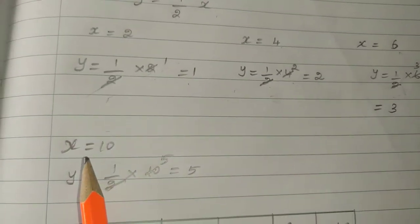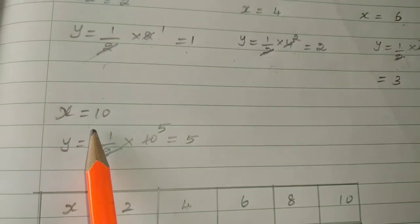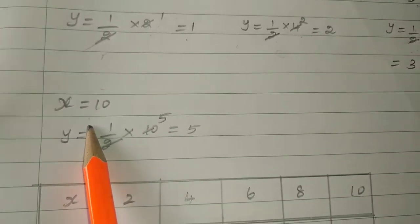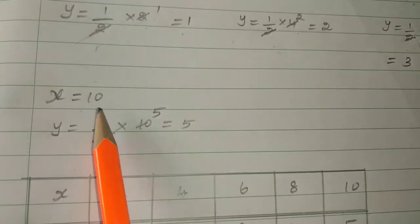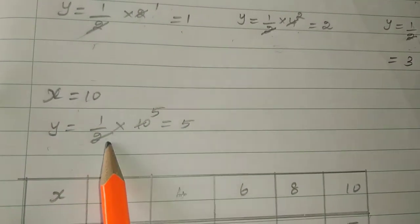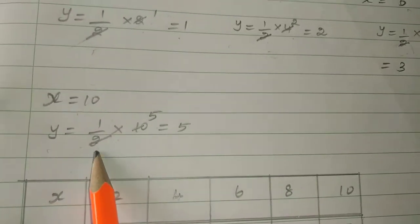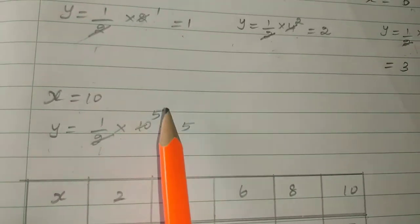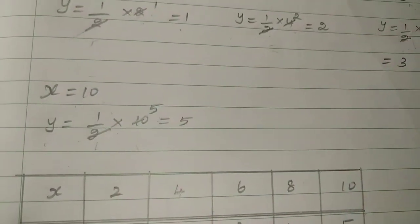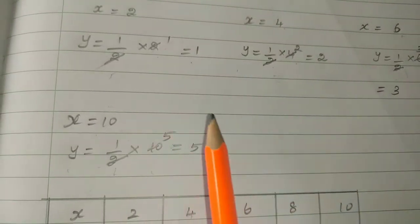Continuing the table: when x is equal to 10, y equal to 1 by 2 into 10, which is 5. These are all the values we can find from the equation.